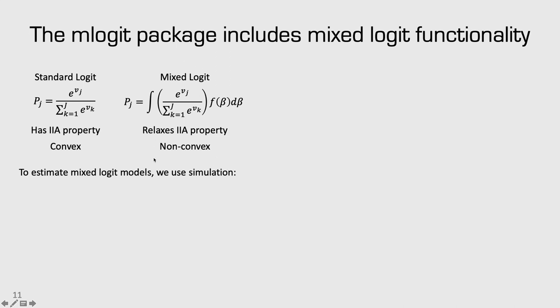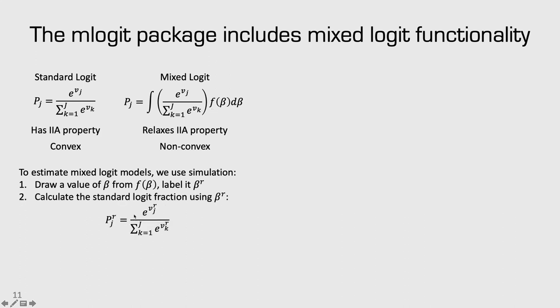To estimate the mixed logit model, we use simulation. The first step is to draw a value of beta from f(beta) — the PDF of beta — and label it beta r. We use that draw to compute the logit fraction, getting probability r. We do this many, many times, storing each pr in a vector. At the end, our estimate of p sub j is the average of all these prs. Every time we compute p sub j in the maximum likelihood loop, we must run this simulation process of drawing betas and computing pr many times. For that reason, the mixed logit model takes much longer to run.